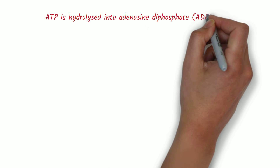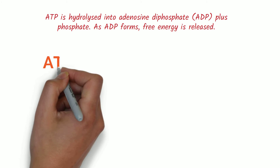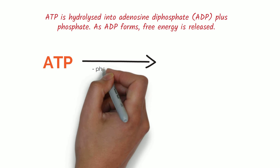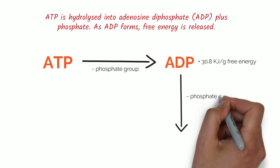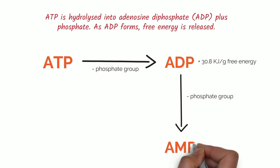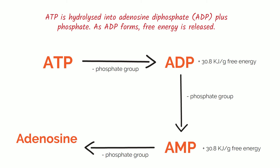ATP is hydrolyzed into adenosine diphosphate and phosphate. As ADP forms, free energy is released. Removal of one phosphate from ATP gives ADP and 30.8 kilojoules per gram of free energy release. Removal of the final phosphate group gives AMP and 14.2 kilojoules per gram of free energy release.